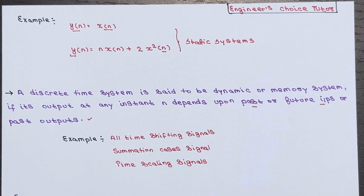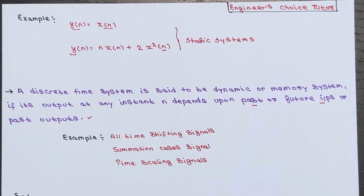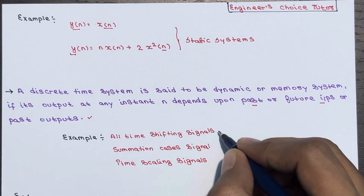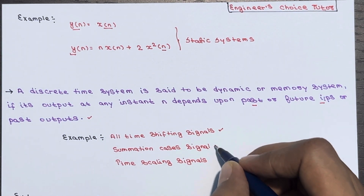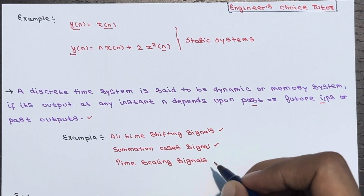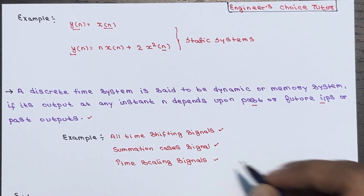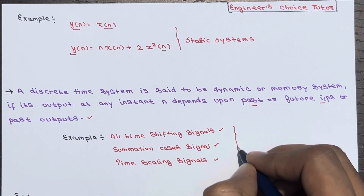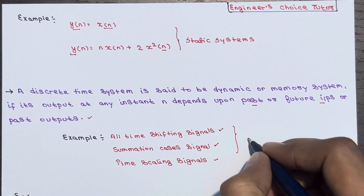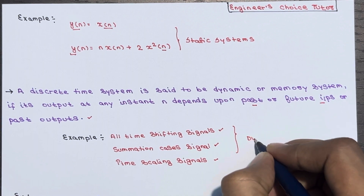To understand the concept of dynamic systems better, note that time-shifting signals, summation of signals, and time-scaling signals — these three categories produce dynamic systems.